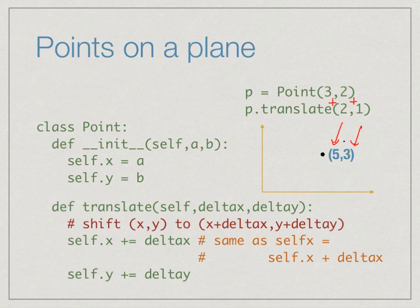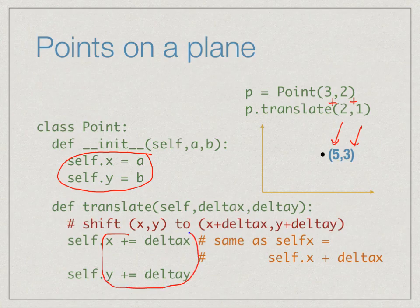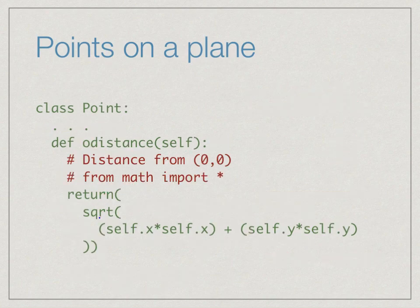The internal implementation is defined inside the init function — this is called when the point is set up, and it associates the internal names x and y with the object. The functions we define externally, like translate, manipulate this internal representation in a way consistent with what we expect the functions to do.